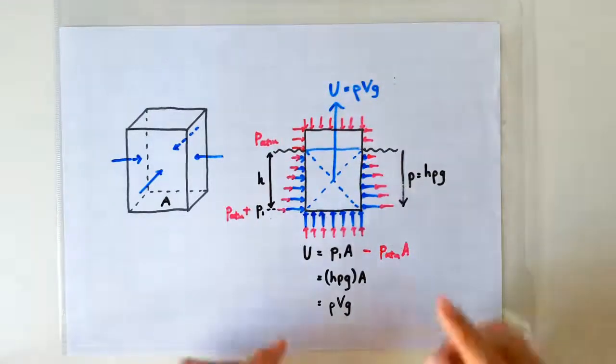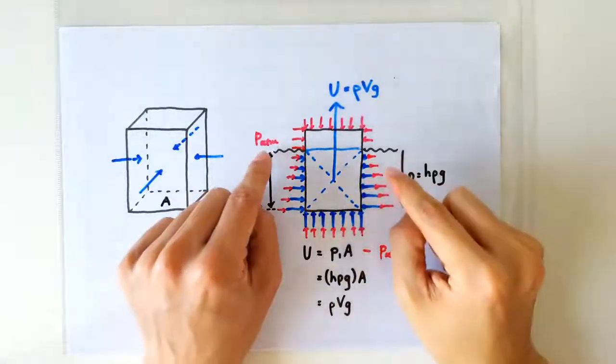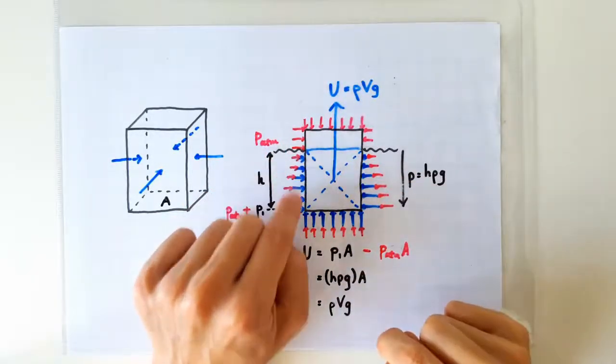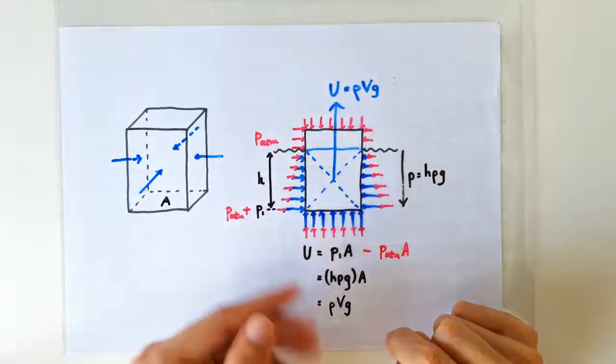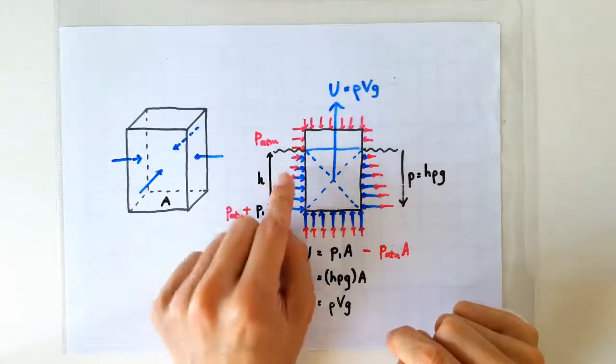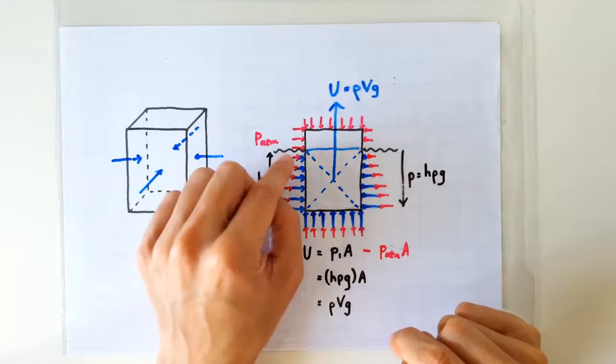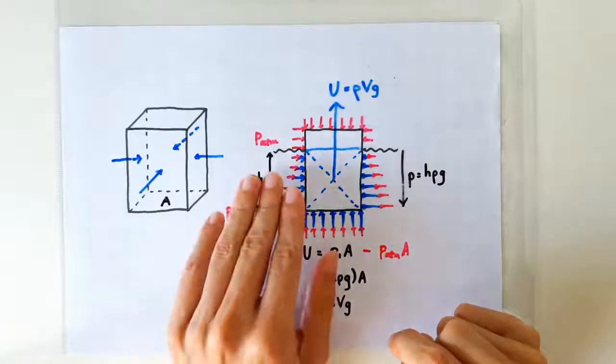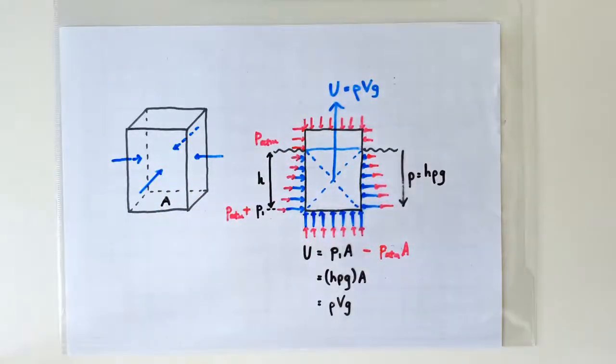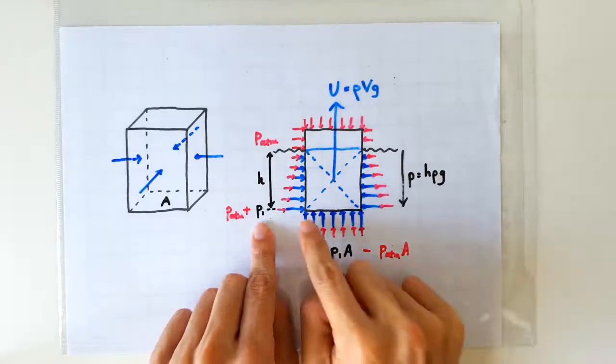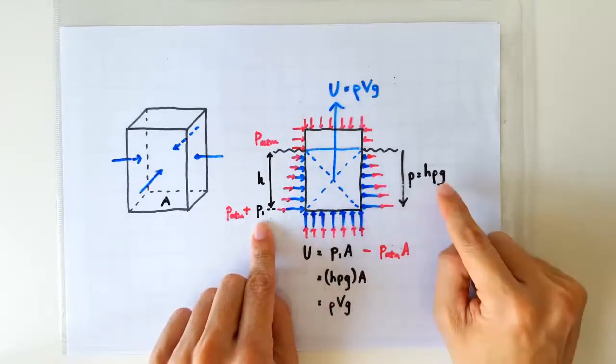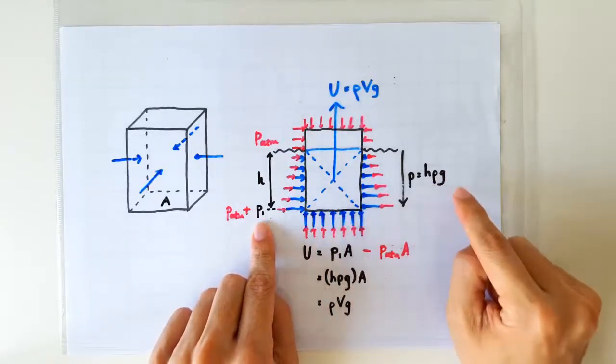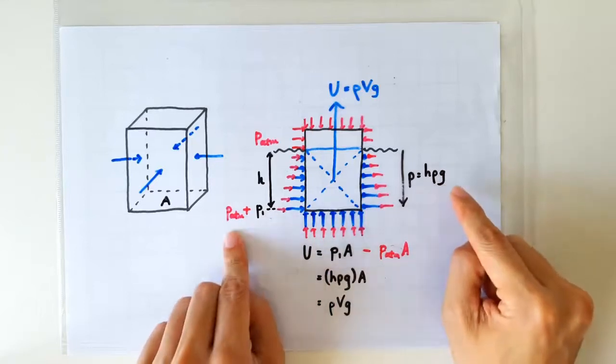But that also reminds us that we have to add the atmospheric pressure to the pressure due to the liquid column in order to arrive at the actual pressure at every depth of the fluid. This means the pressure at the bottom surface is not just hρg—it should be hρg plus atmospheric pressure.